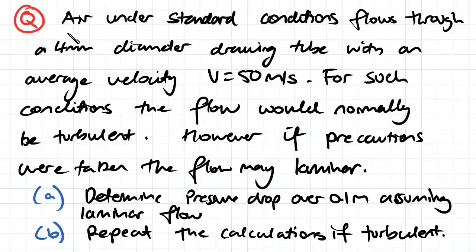So we've got our question here. Air under standard conditions flows through a 4mm diameter drawing tube with an average velocity v equal to 50 meters a second.